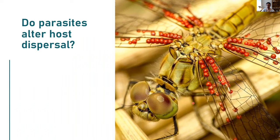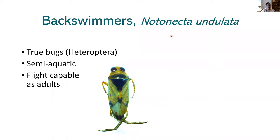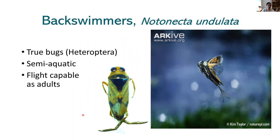I tested this using the backswimmer Notanecta angulata. Backswimmers are semi-aquatic true bugs that live in water but breathe air. This species tends to live in small fishless ponds. They are facultative dispersers — they can live their entire life cycle in the same pond, but the adults have wings and are capable of dispersing by flight between ponds. Backswimmers tend to be really clunky flyers — they can fly in one direction and kind of drag their legs behind them.